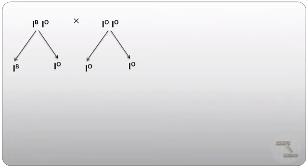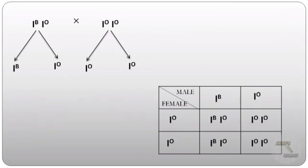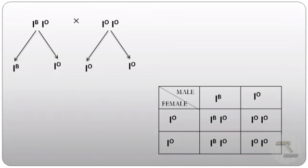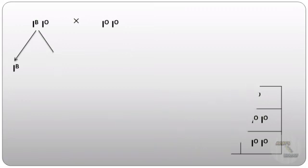Now if the father has blood group B and the mother has blood group O, we get gametes Iᴮ and Iᵒ from the father, and Iᵒ and Iᵒ from the mother. From the Punnett square, 50% of the children will have blood group B and 50% will have blood group O. This means 50% of the children will have the same blood group as the father and 50% will have the same as the mother.